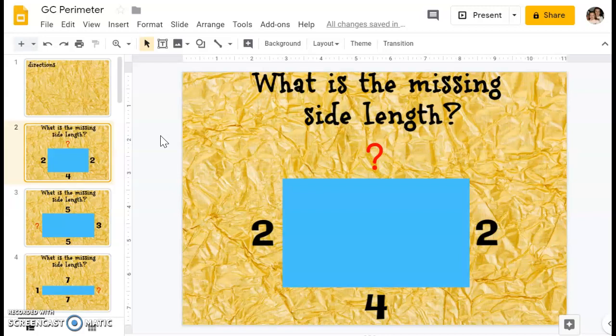So we're looking at these rectangles today, and all the blue rectangles we're finding the missing side length. There might be one or there might be more than one, so you're going to fill in whatever question marks that you see.